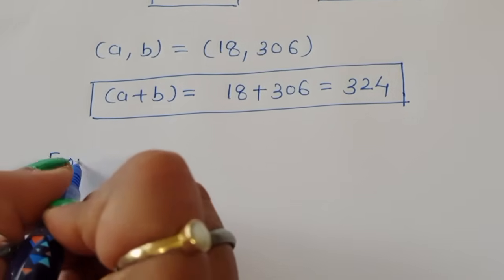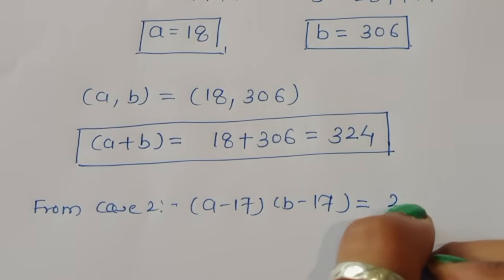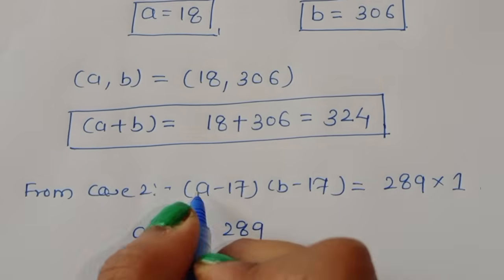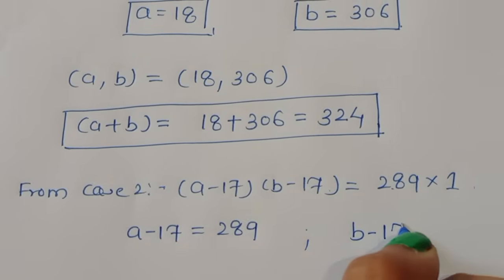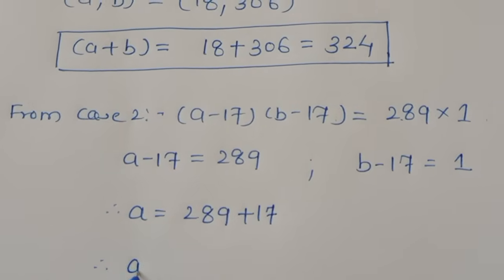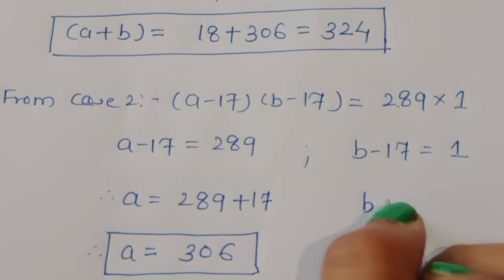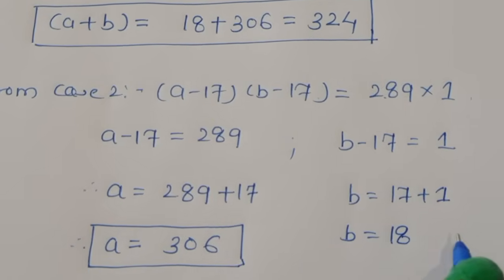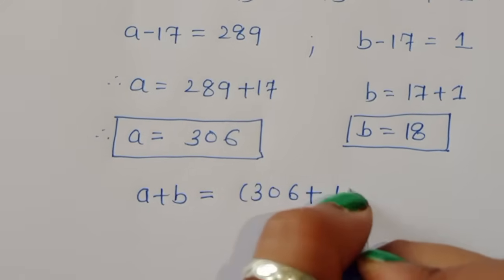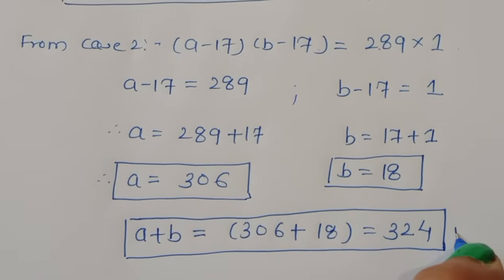Case 2: (a - 17)(b - 17) = 289. Comparing, a - 17 = 289 and b - 17 = 1. Therefore a = 289 + 17 = 306 and b = 1 + 17 = 18. So a + b = 306 + 18 = 324. Cases 1 and 2 give the same value of a + b = 324.